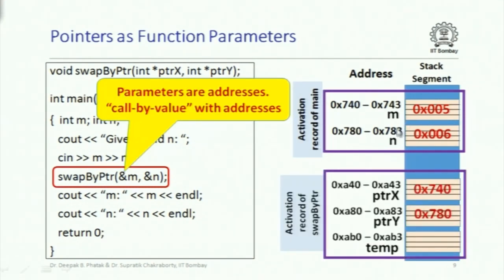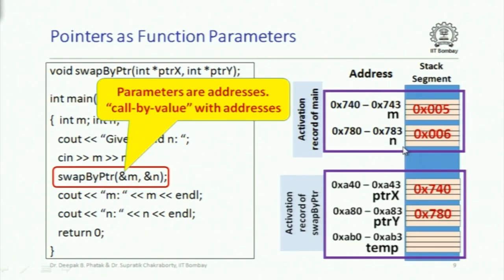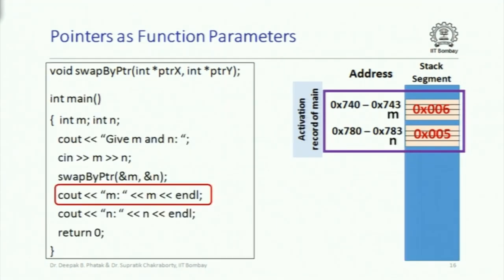The activation record of main has m and n with their addresses. The activation record of swap_by_pointer gets the addresses of m and n copied into its formal parameters. Now that swap_by_pointer has those addresses, it can use the star operator to access those variables, read their values, change their values. That is how the values of m and n are changed in main's activation record by a different function.